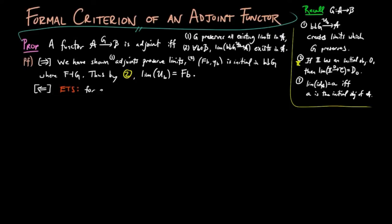Conversely, it is enough to show that for each B object B, the category B over G has an initial object.